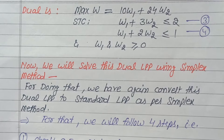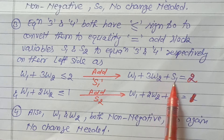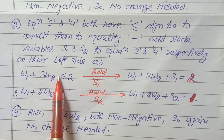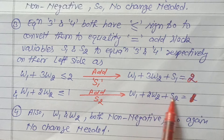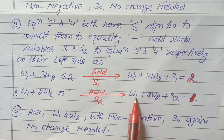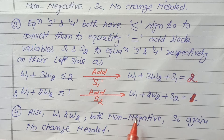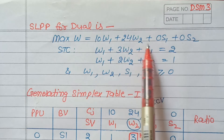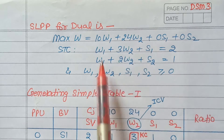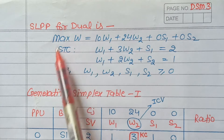To convert inequalities to equalities, we add slack variables to the left-hand side. After adding slack variable s1, the first equation becomes w1 + 3w2 + s1 = 2. After adding slack variable s2, the second equation becomes w1 + 2w2 + s2 = 1. Since w1 and w2 are already non-negative, the final standard LPP for the dual is: maximize Z = 10w1 + 24w2 + 0s1 + 0s2, with all four variables greater than or equal to zero.